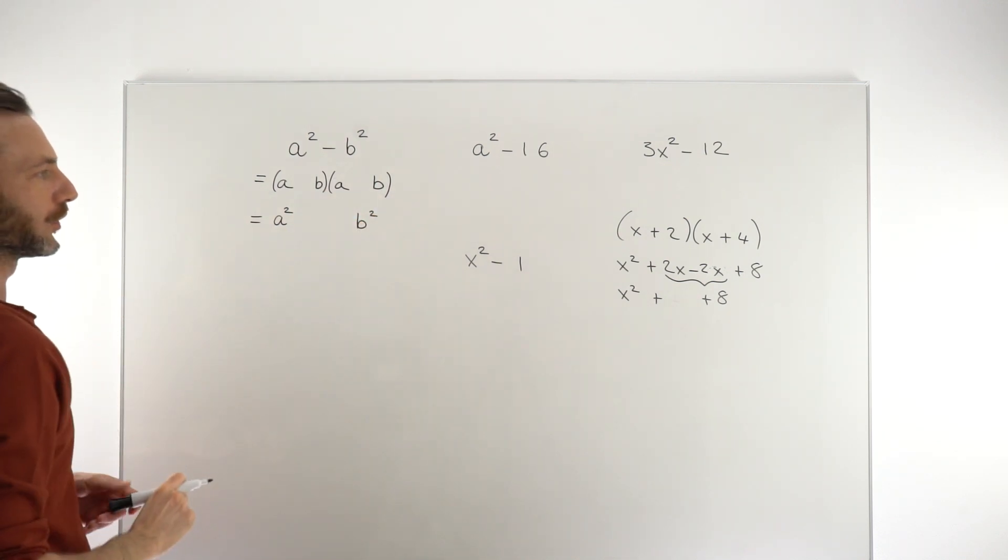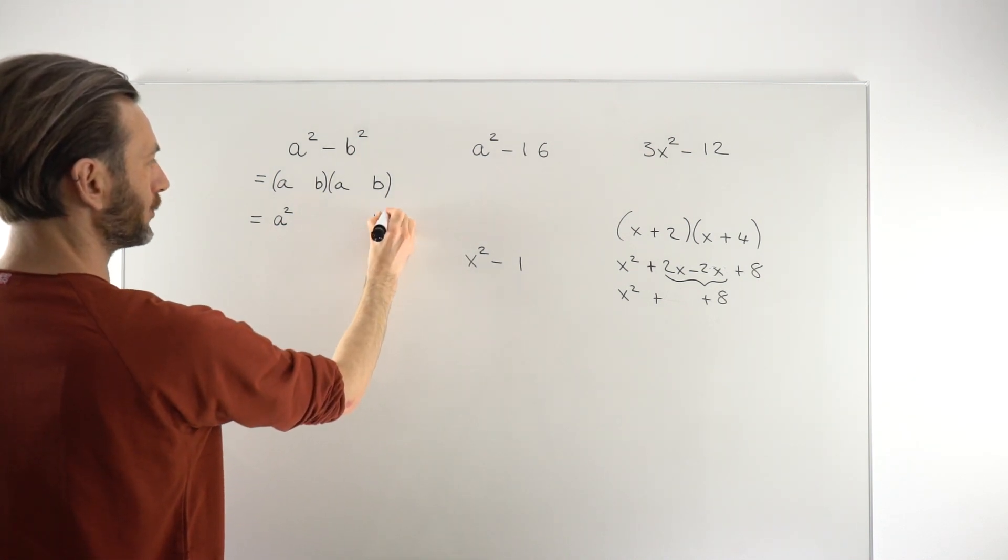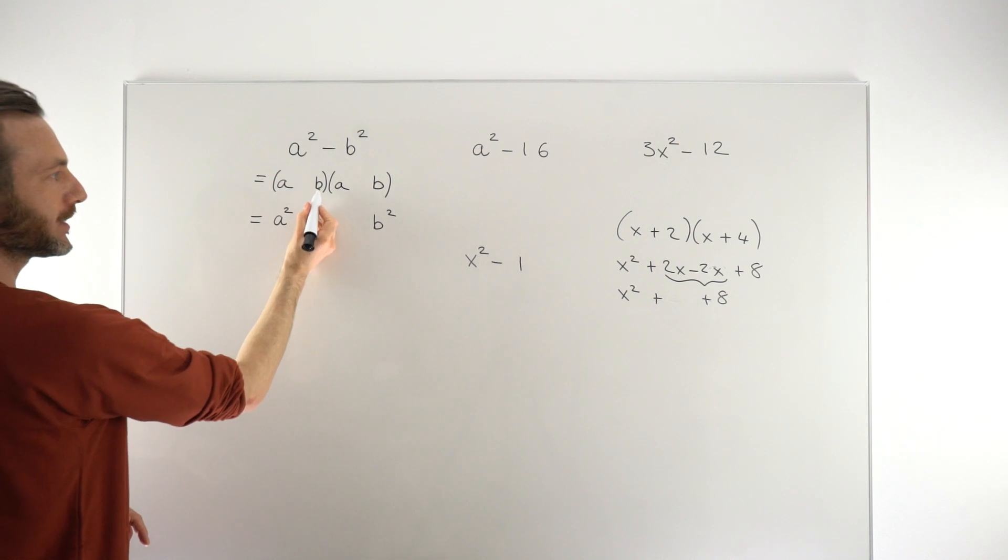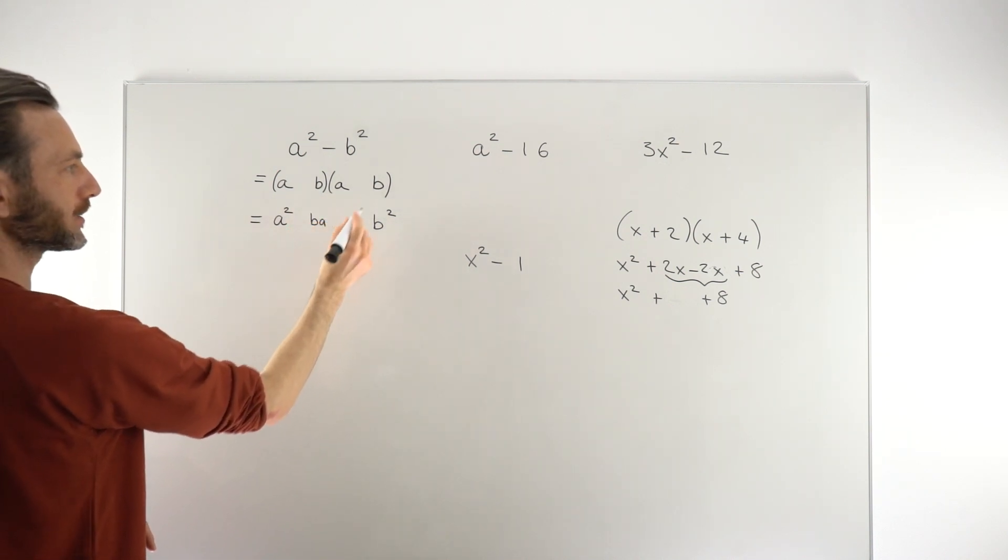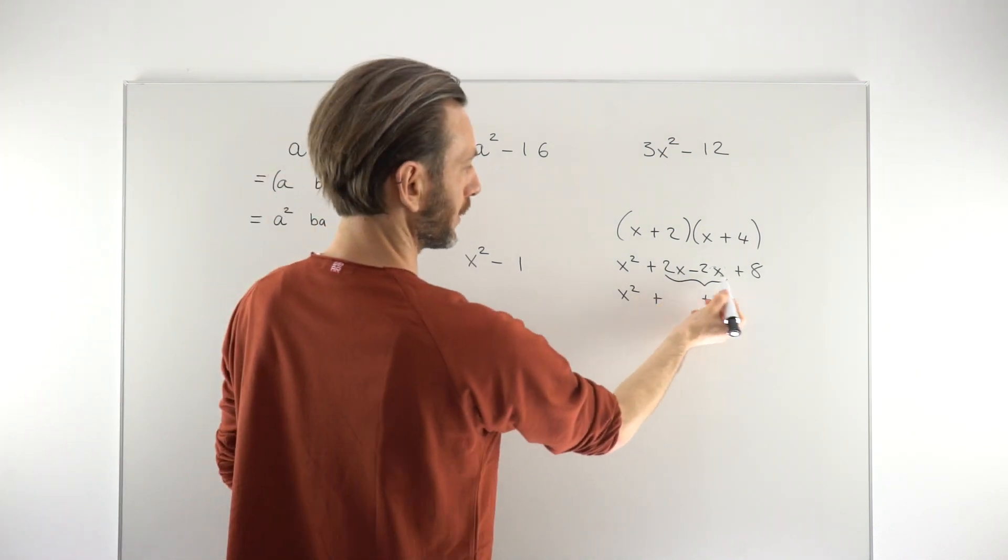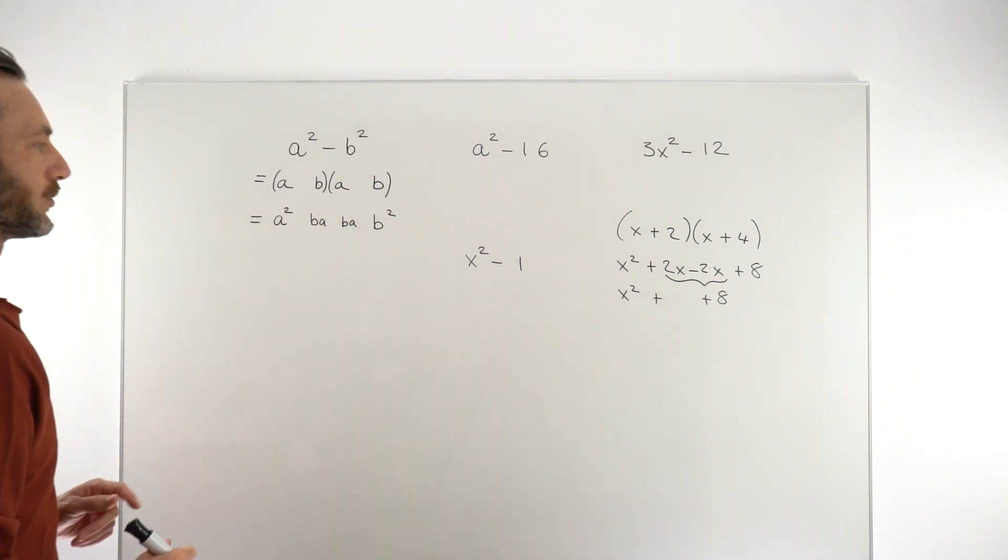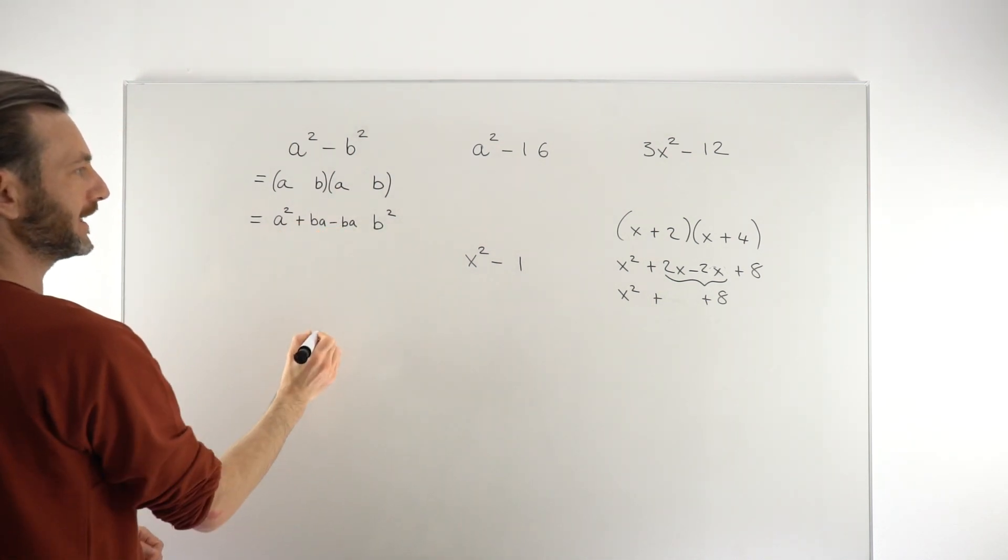Then we think, what would happen if we multiplied that out? We would get a². We would get b times b giving b². What can we do about the middle terms? This is going to multiply to give ab. This is going to multiply to give another ab. We want those to cancel just like my 2x and -2x. That means one would have to be positive, one would have to be negative.